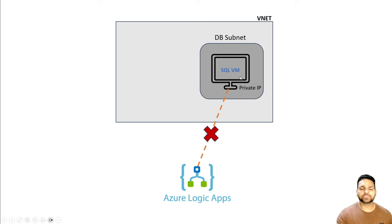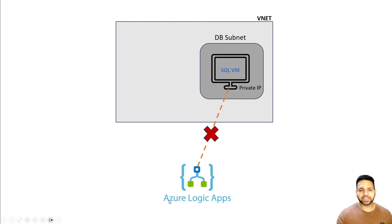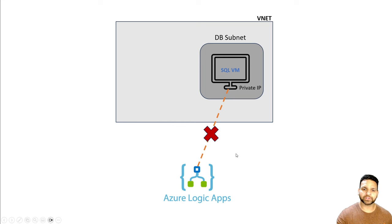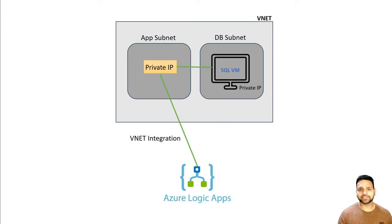So let's start. You have deployed a Windows virtual machine where there is a SQL server running. It has a private IP address and it is in the database subnet. It's a part of the virtual network, and the Azure Logic App, which is a public endpoint PaaS service — by default the PaaS service cannot connect to the resources in your virtual network. So when you try to create a connection between the Azure Logic App and the SQL virtual machine, it will fail.